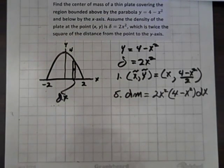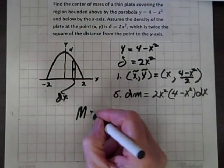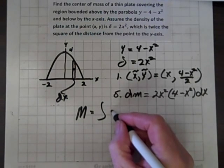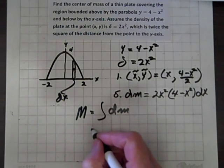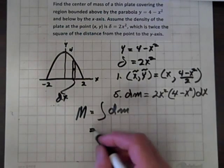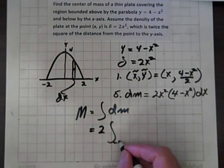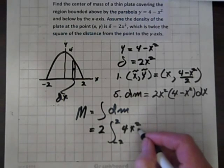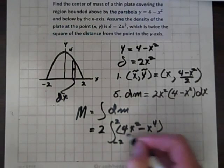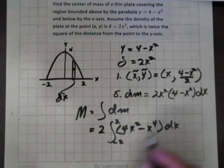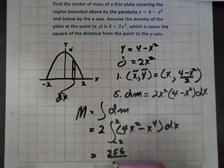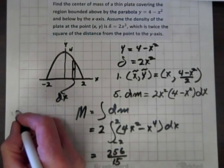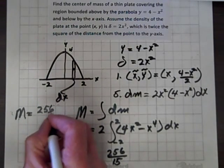We have the equation for the mass of the strip; now we'll find the mass of the entire plate. Mass equals the integral of the mass of the strip, which equals 2 times the integral from negative 2 to 2 of x squared times 4 minus x squared, multiplying through to get x squared minus x to the fourth dx. When we carry out that integral, we get 256 over 15. So the mass of the entire plate equals 256 over 15.